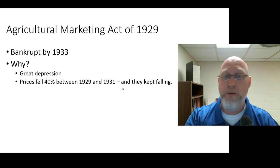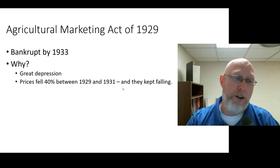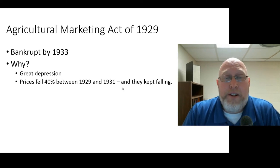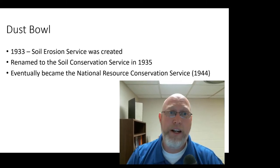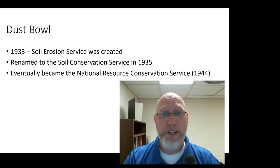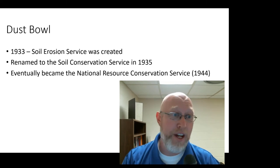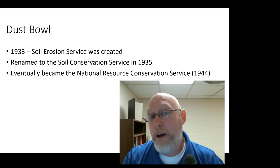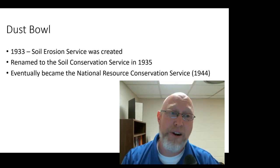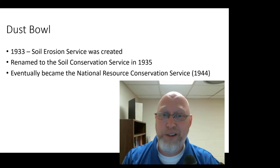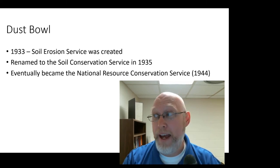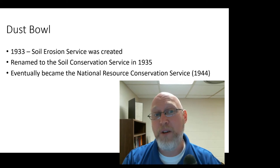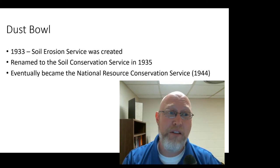Prices just kept right on going down, and the Great Depression was ongoing — it wasn't happy times. There were also droughts; the Dust Bowl happened during this time period. We had land that we probably should have never been farming, and a drought, and we got these giant dust storms. Something had to be done about that, and that thing was the Soil Erosion Service, which was created in 1933.